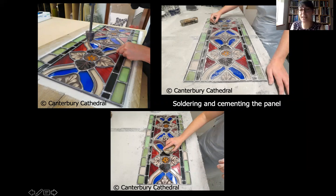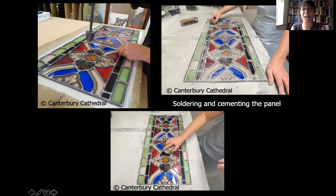That panel is then ready to go into a window, probably in a wooden or metal frame within the stonework. I appreciate that was a whirlwind introduction to the techniques, but these techniques haven't really changed over the course of history that much, although new techniques have appeared. Understanding this process will help us to appreciate the artistry and craftsmanship that goes into making stained glass.